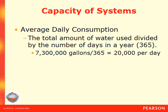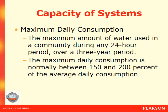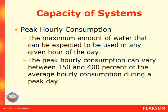Average daily consumption can be figured as follows: the total amount of water used divided by the number of days in the year. For example, 7,300,000 gallons divided by 365 days equals about 20,000 gallons used per day in the municipality. Maximum daily consumption is the amount of water used in a community during a 24-hour period over a three-year period; it is normally between 150 and 200 percent of the average daily consumption. Peak hourly consumption is the maximum amount of water expected to be used in any given hour of the day and can vary between 150 and 400 percent of the average hourly daily consumption during a peak day.